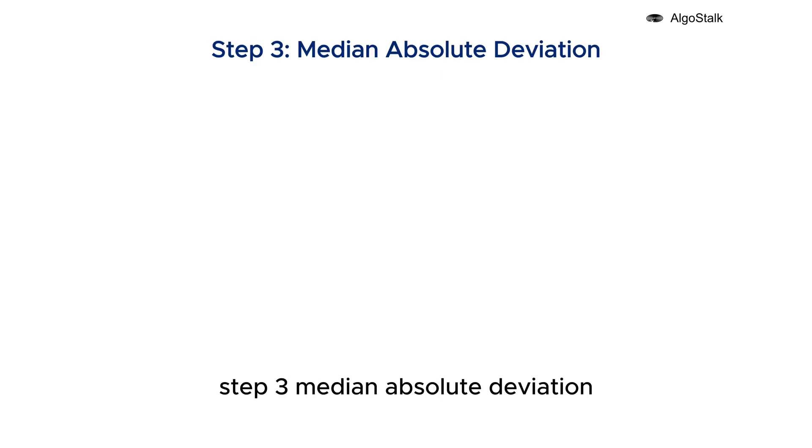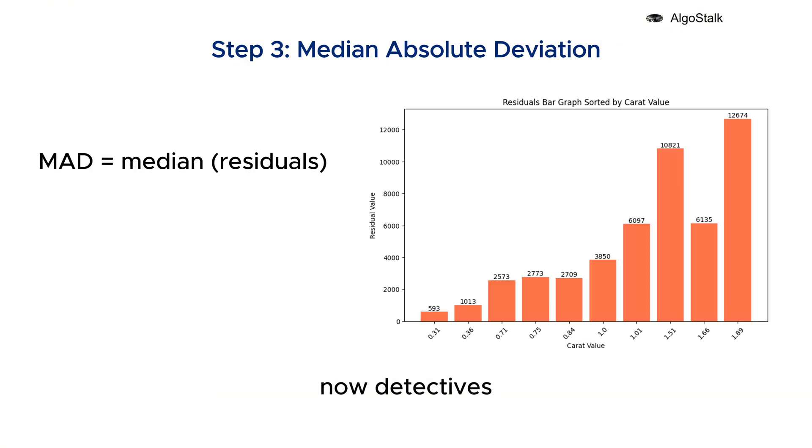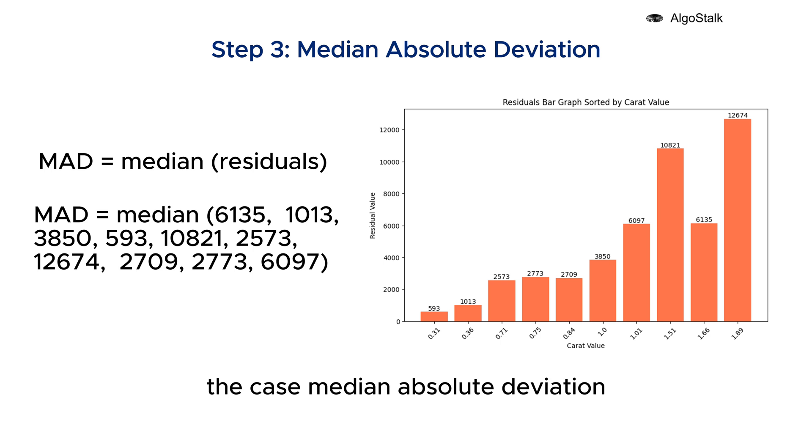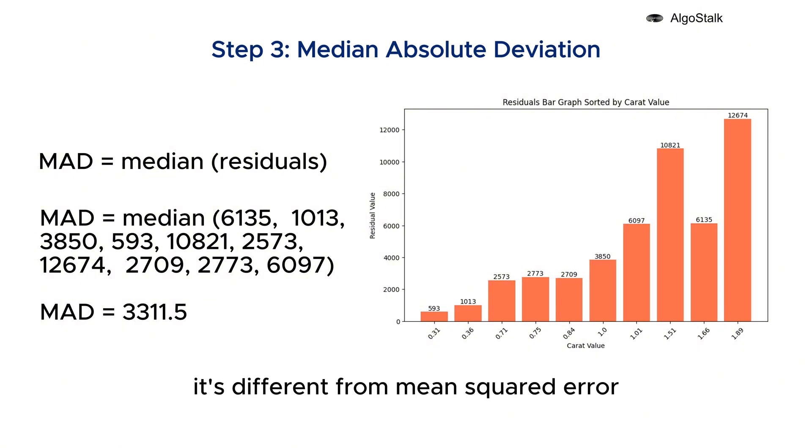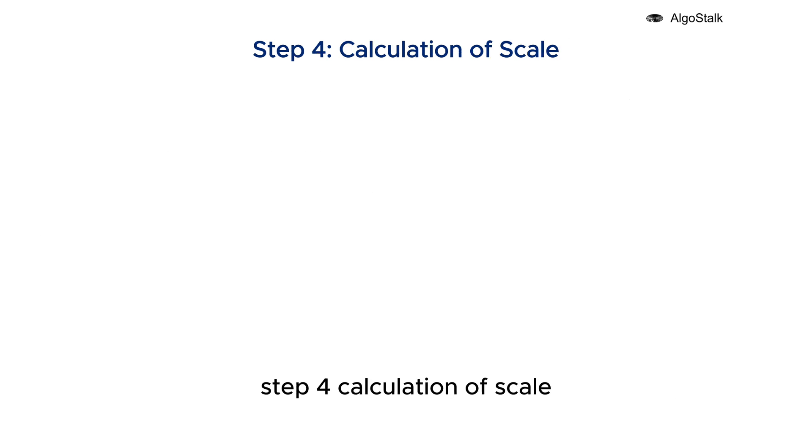Step three: median absolute deviation. Now detectives, there's another important concept that helps us solve the case: median absolute deviation. This tells us how far each clue is from the actual answer. It's different from mean squared error where we square the errors and take the mean. MAD just takes the absolute value. Why use the median? The median is a robust statistic because it is less influenced by extreme values. In the context of Huber regression, using the median helps prevent large residuals from outliers from distorting the estimate of the central tendency of the residuals.